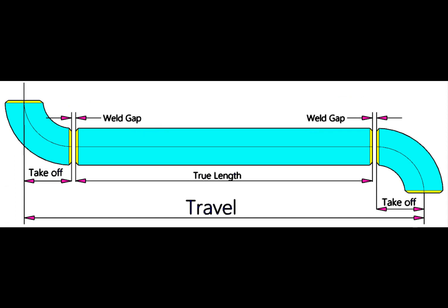So, how we will calculate the true length of the spool? The true length or the cut length is: add two welding gap and two take-off, then minus this sum from the travel.